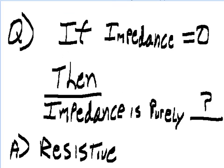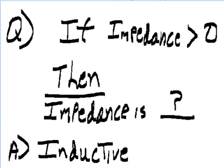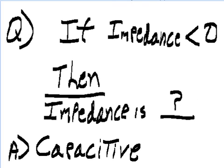If impedance equals zero, then impedance is purely what? Answer: resistance. If impedance is greater than zero, then impedance is what? Answer: inductive. If impedance is less than zero, then impedance is what? Answer: capacitive.